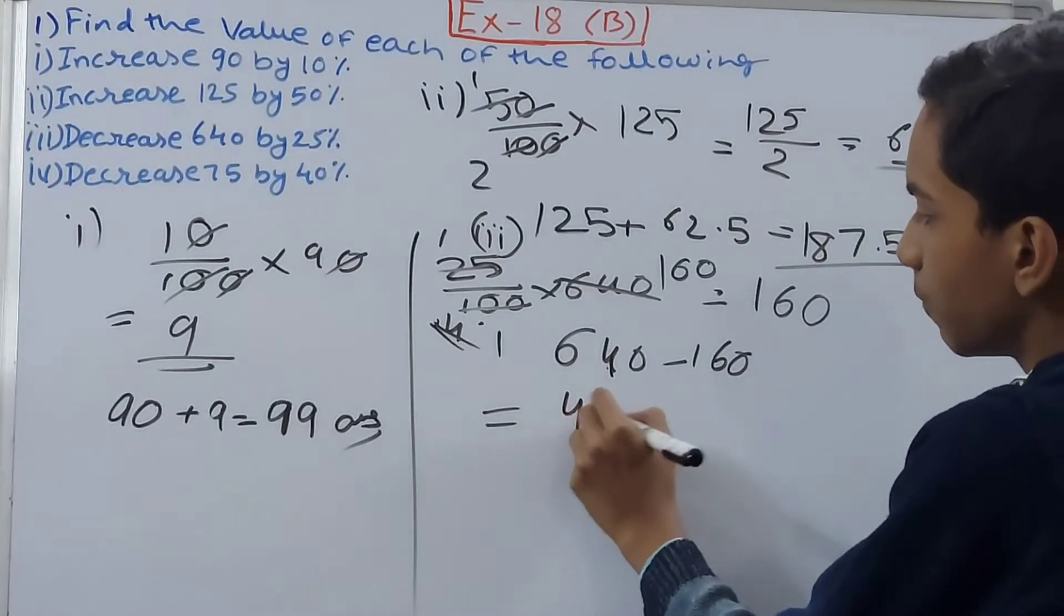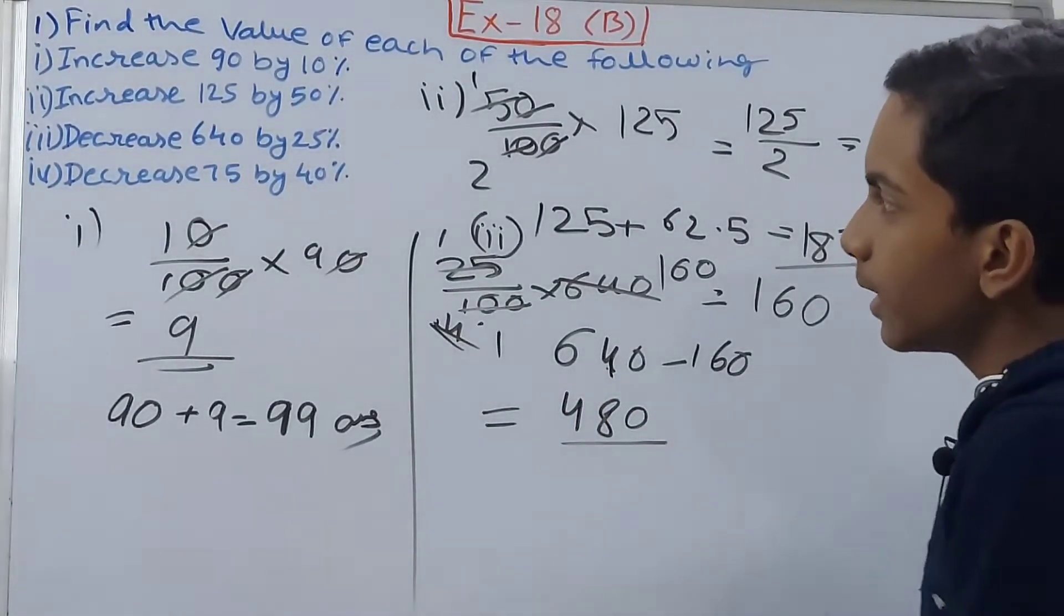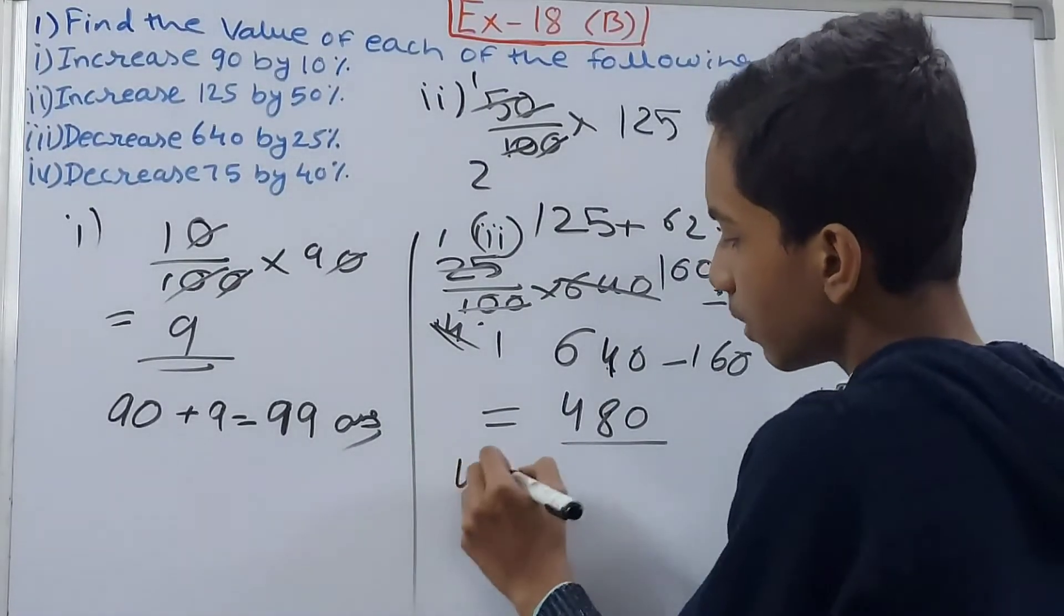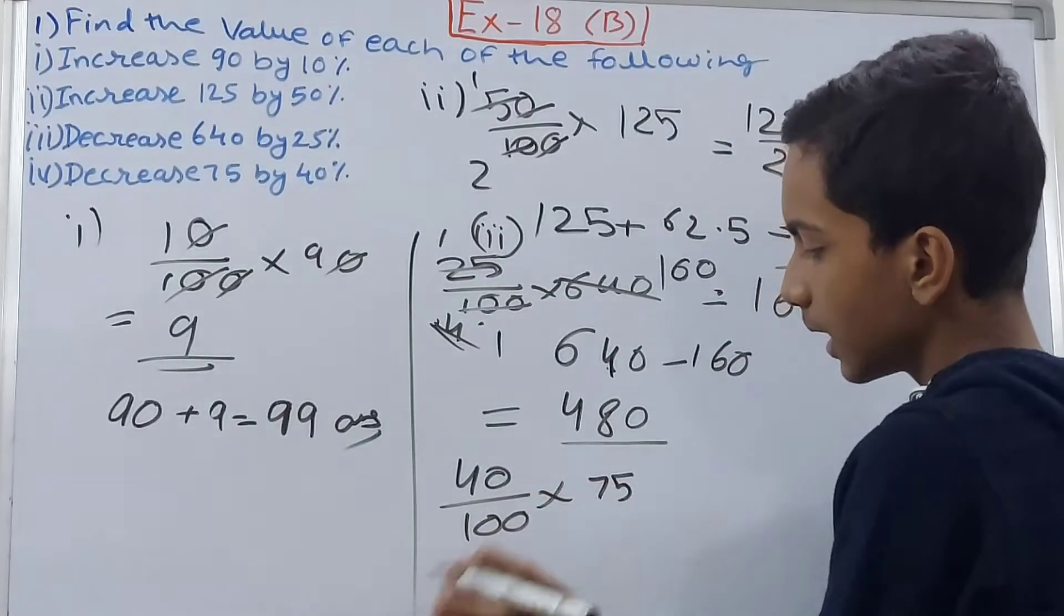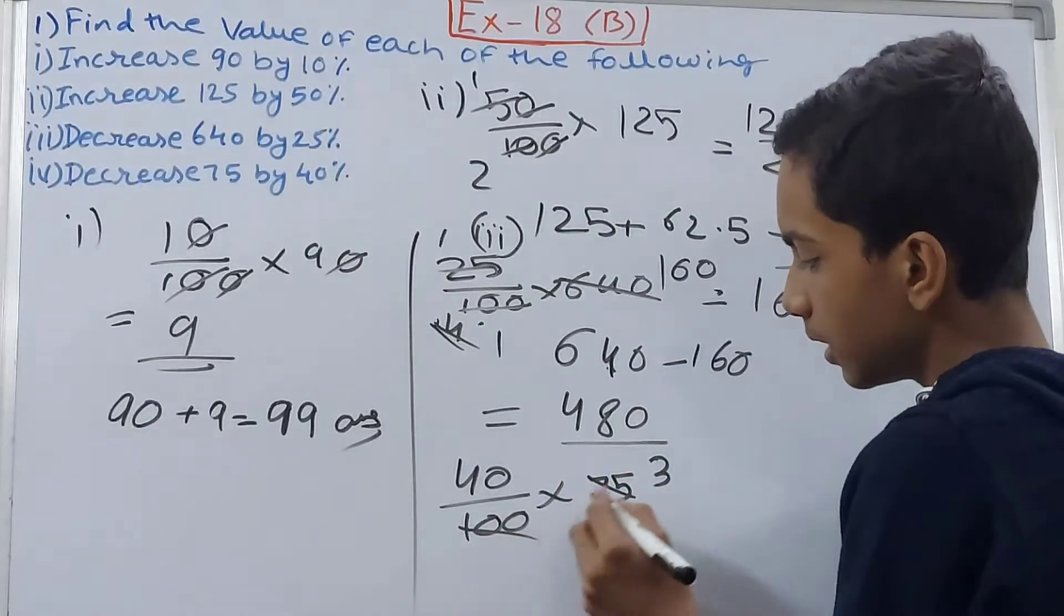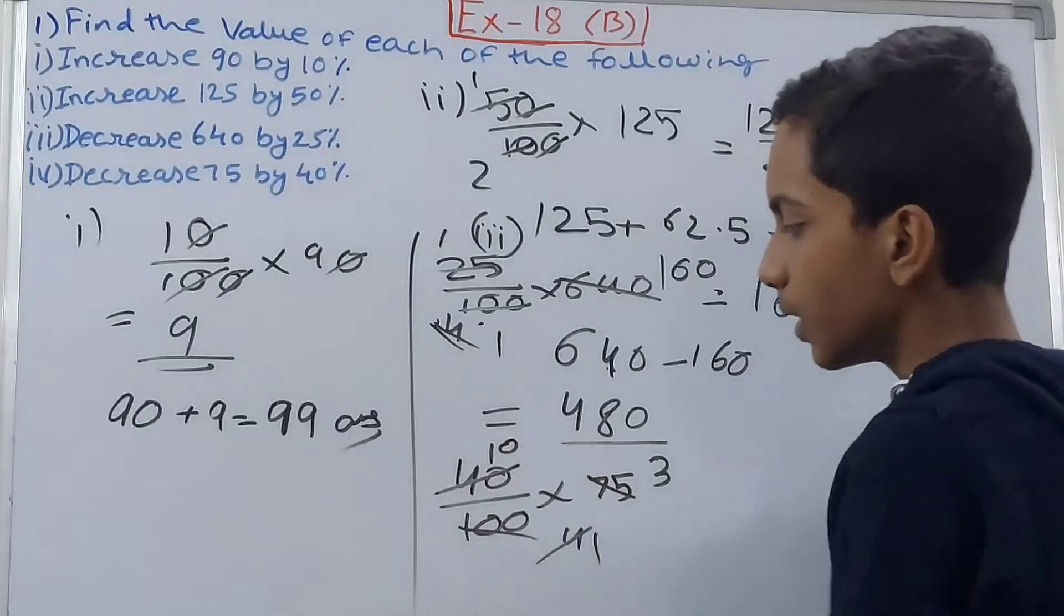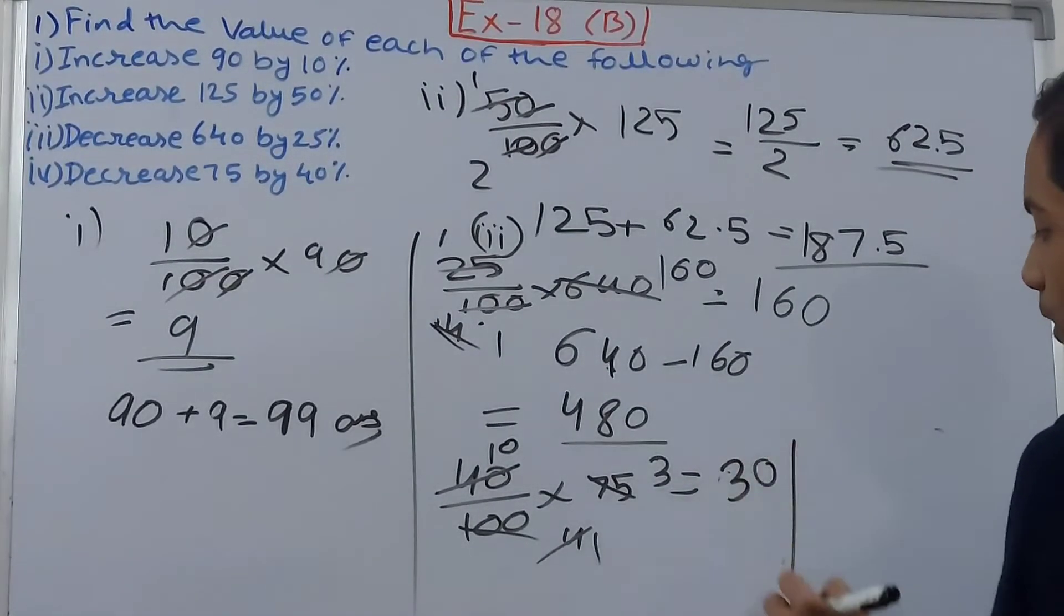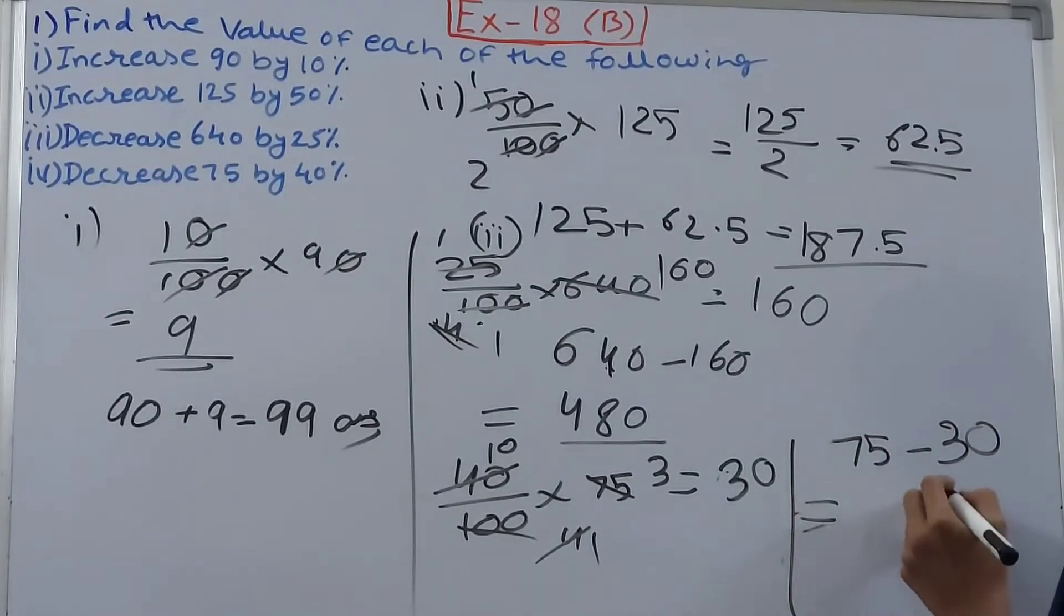Then we have decrease 75 by 40%. Again same thing, 40 upon 100 into 75. Again I'll cancel this and this, this will be going three times by 25, this will go four times by 25, 4 and 40 gets cancelled, so 1 and 10 times, so 10 into 3 becomes 30. Therefore that will be decreased from 75, so 75 minus 30, this will give us 45. So this becomes our decreased value.